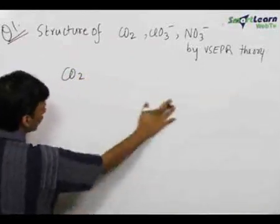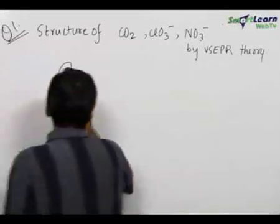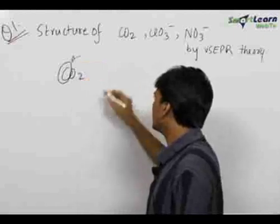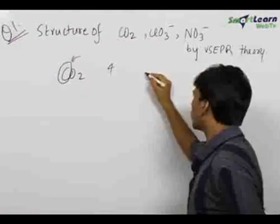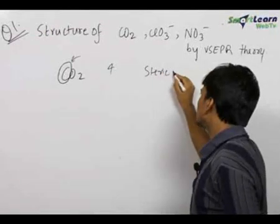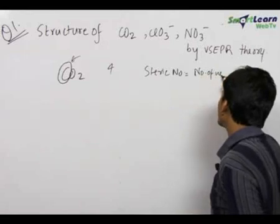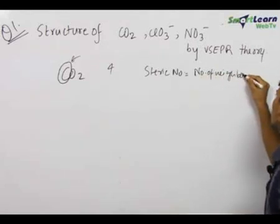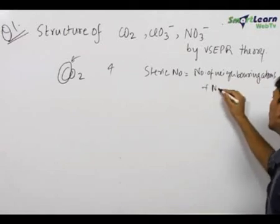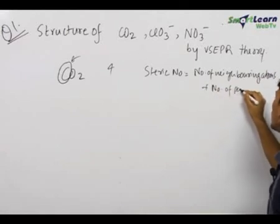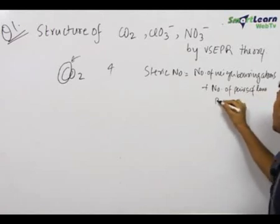Let us first start with CO2. The first step is to find out the number of electrons in the outermost shell of the central atom, which is carbon. The number of electrons in the outermost shell of carbon is 4. In this method, you should always first find out the steric number. The steric number is equal to the number of neighboring atoms plus the number of lone pairs on the central atom.